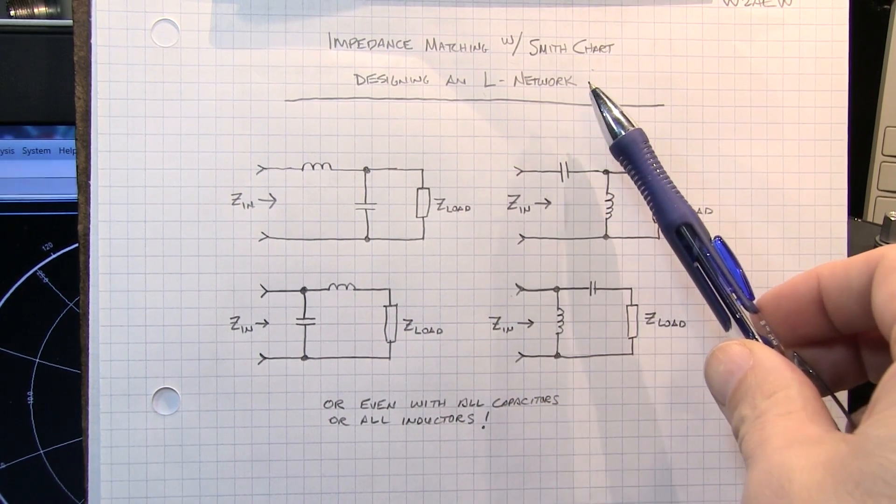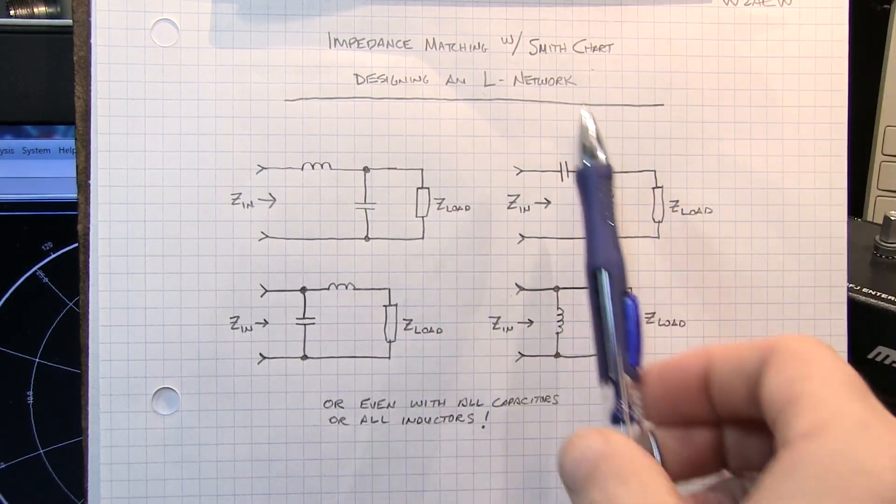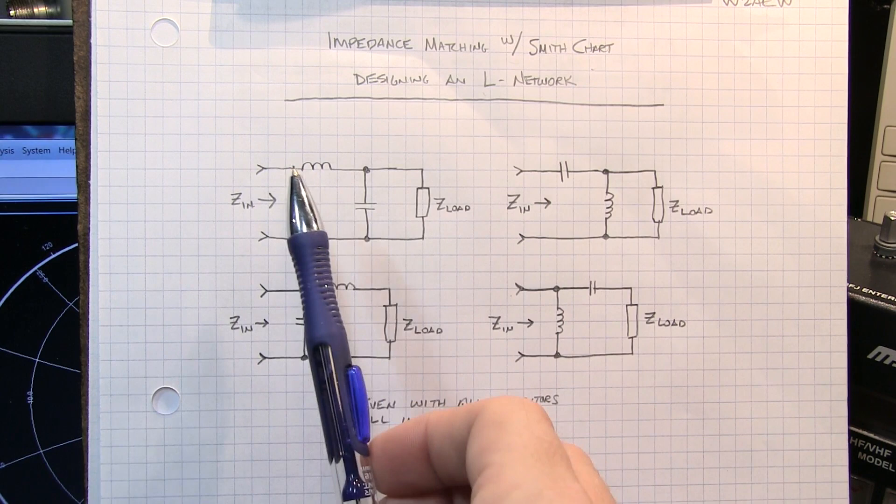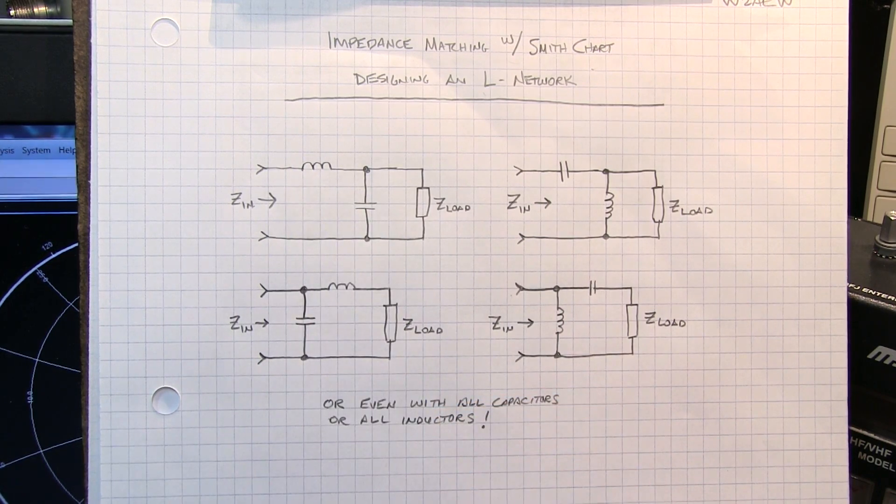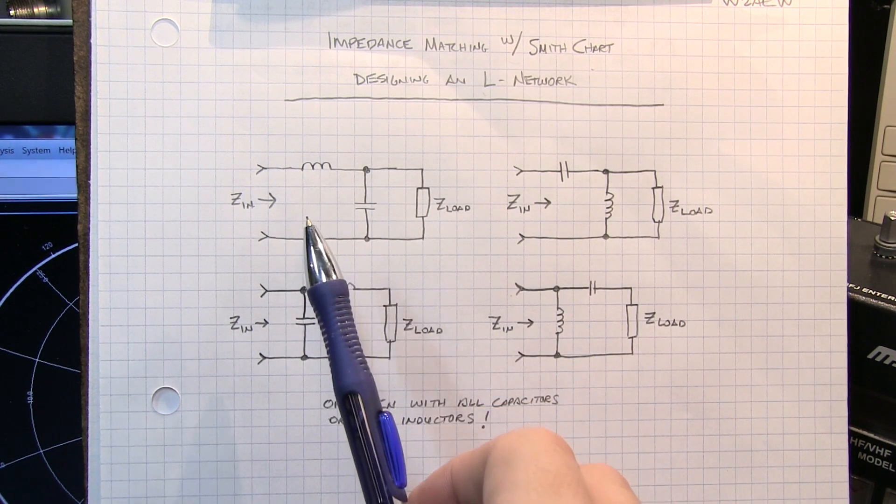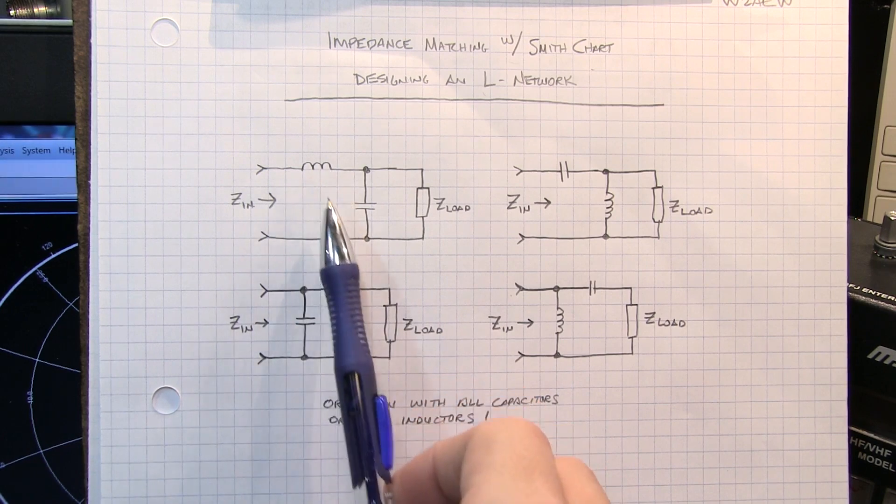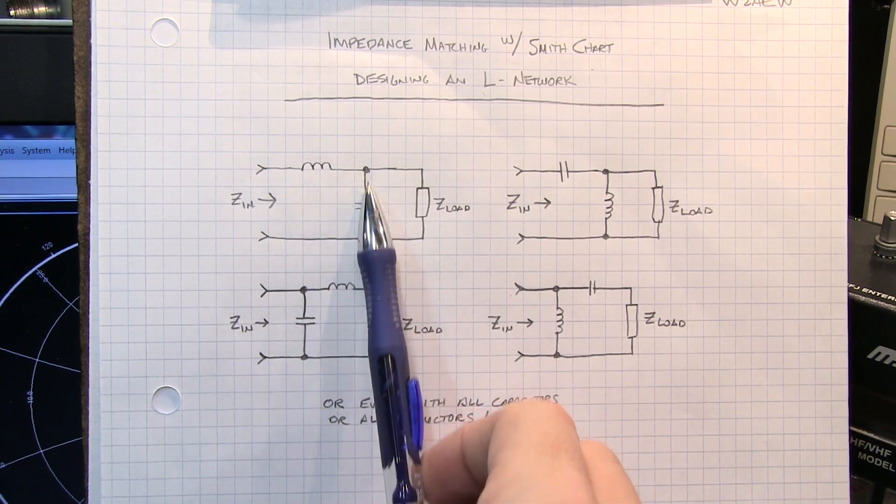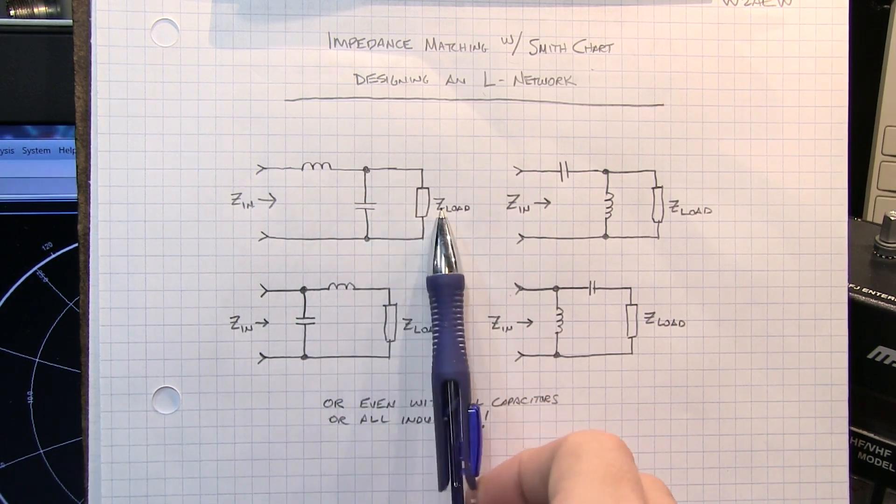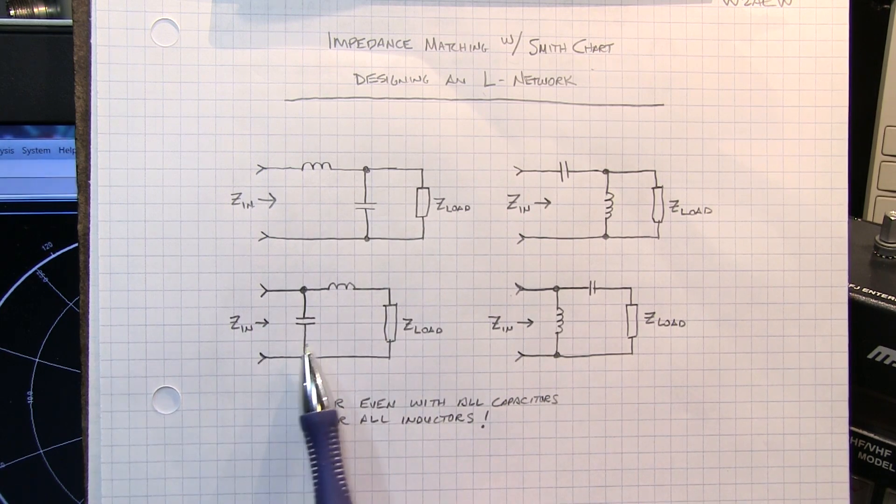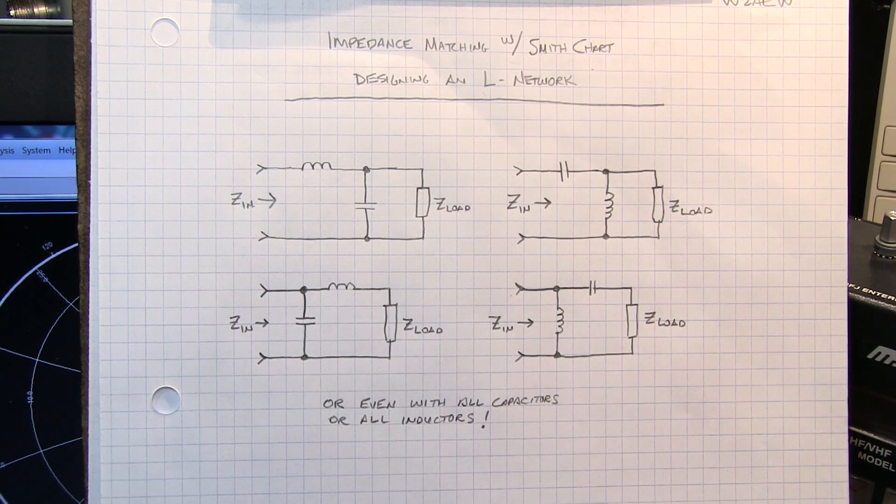The L network is a very simple two-element matching network, and it's called an L simply because of the shape or the arrangements of the components in a schematic. It will typically consist of either a series element and a shunt element. That shunt element will either appear across the load or across the input, depending on the nature of the load that we're trying to match to the system impedance.